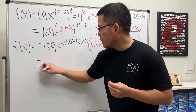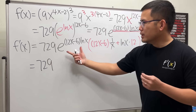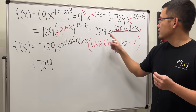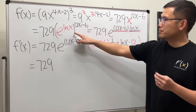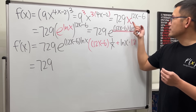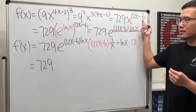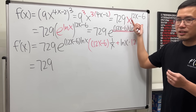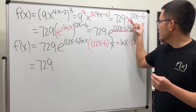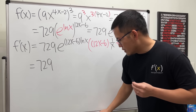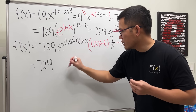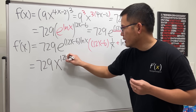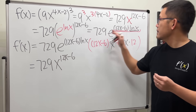Now simplifying: we still have 729, and e raised to (12x − 6) · ln x is just x^(12x − 6) — tracing back, that's exactly our original function part without the 729. So we write x^(12x − 6).